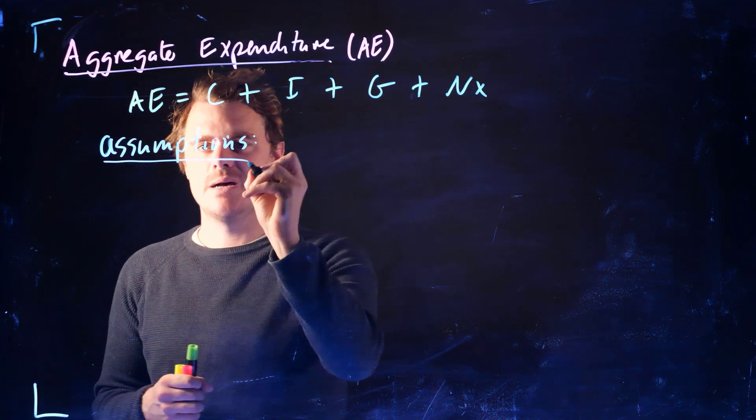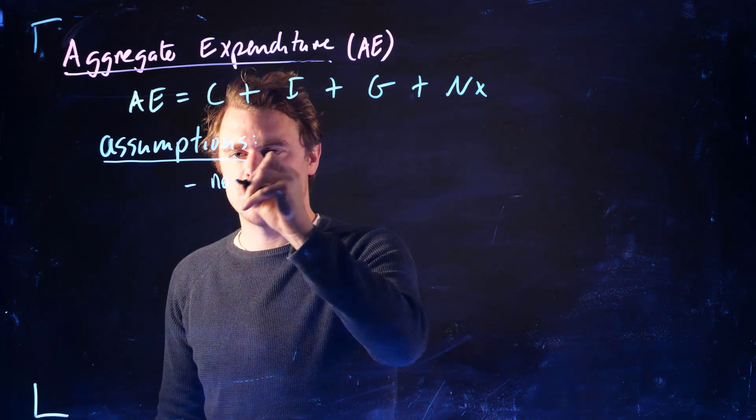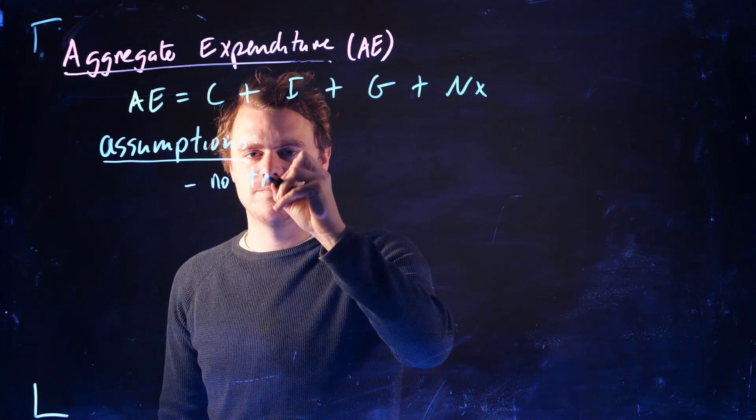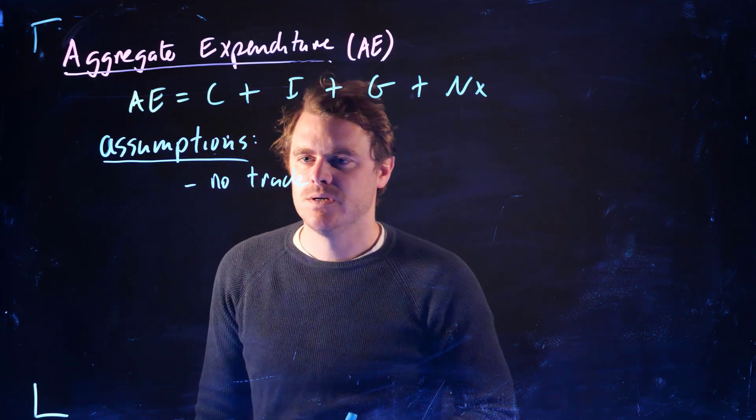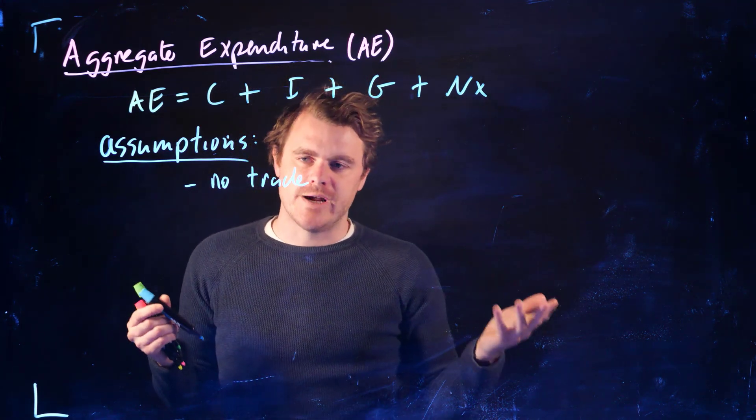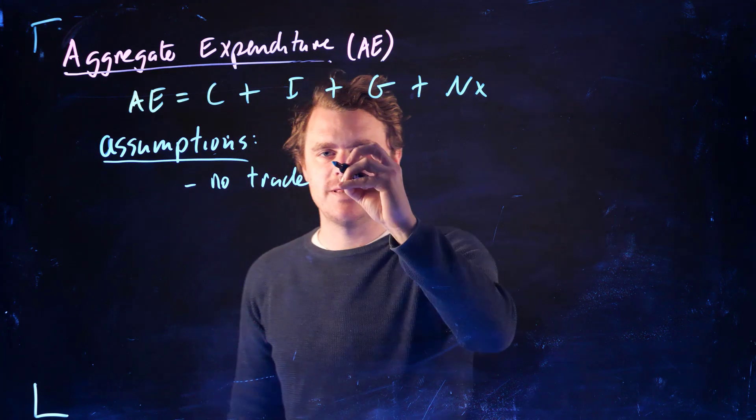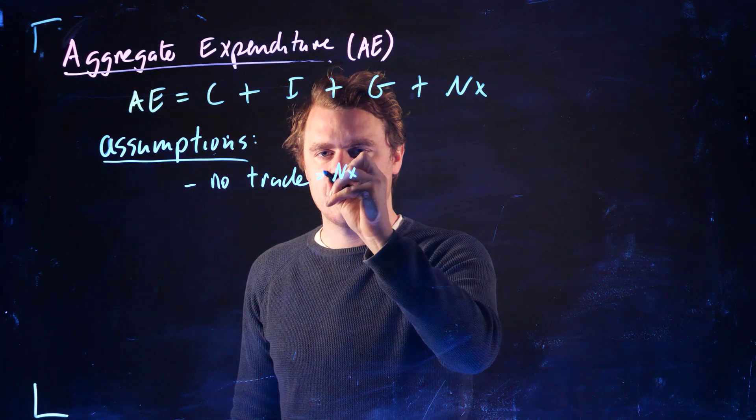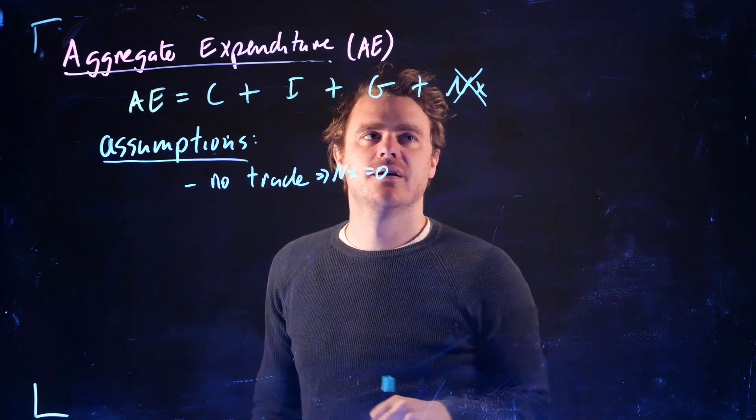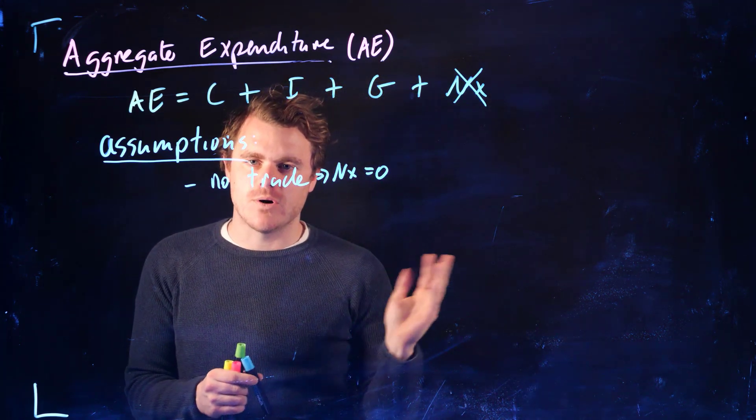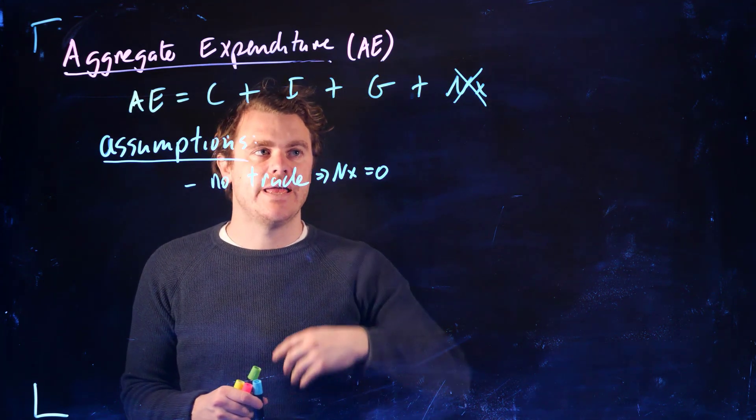So the first assumption that we're going to make is there's no foreign trade. So there's no foreign trade is what I mean by that. So essentially that means NX equals zero. We're going to get rid of the net exports part of our expenditures.